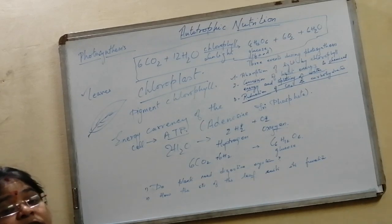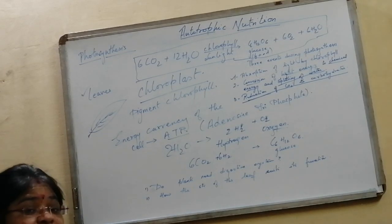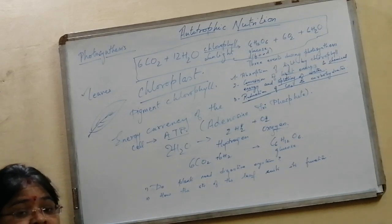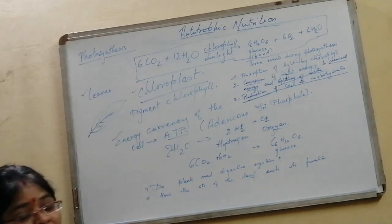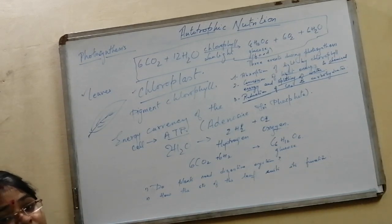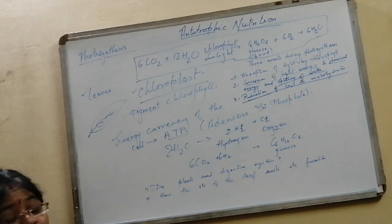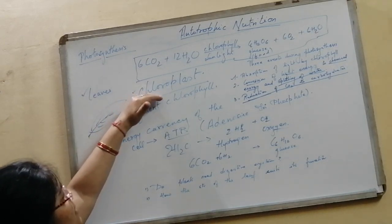In the leaf, where is photosynthesis taking place? In the cells. In cells, which organelle you have read in class 9? The chloroplast. Chloroplast is the organelle where your food is being prepared. It is called the kitchen of the cell.